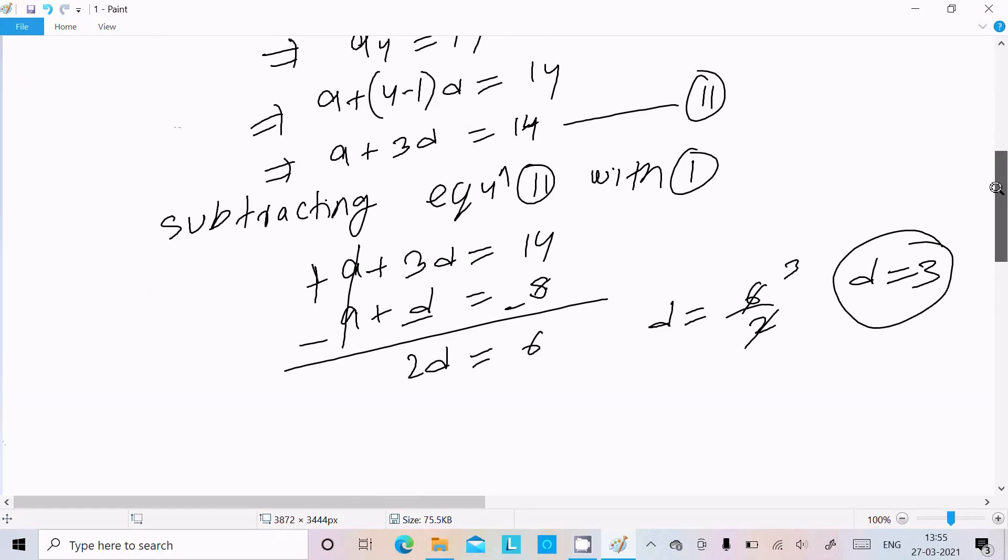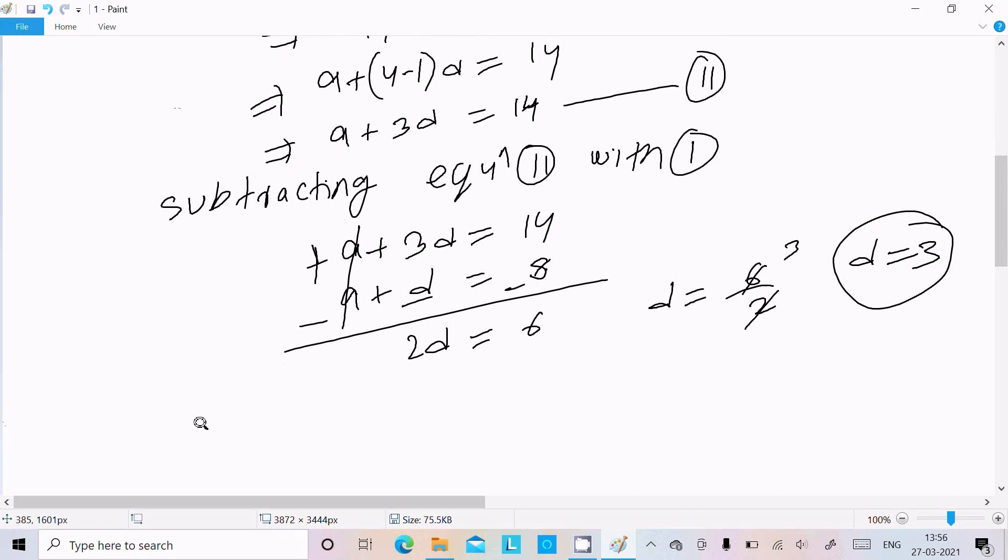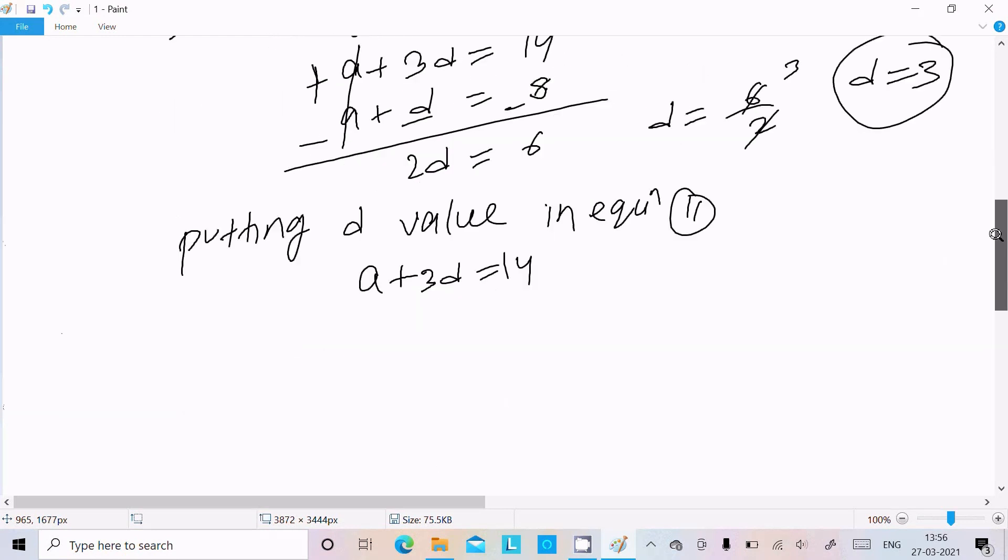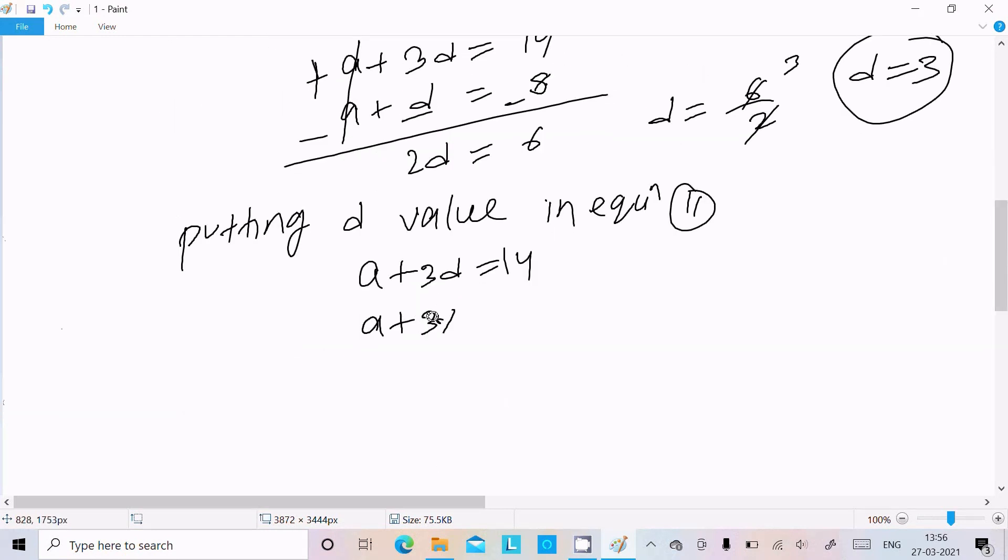Now putting this d value in equation 2: a + 3d = 14, so a + 3×3 = 14. This gives a + 9 = 14, so a = 14 - 9 = 5.